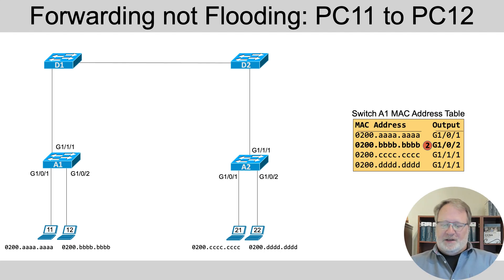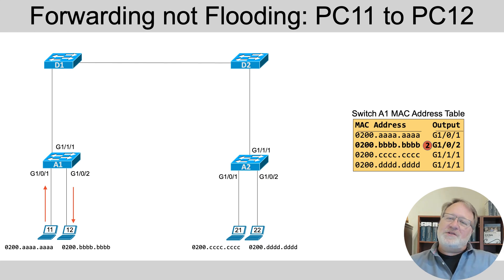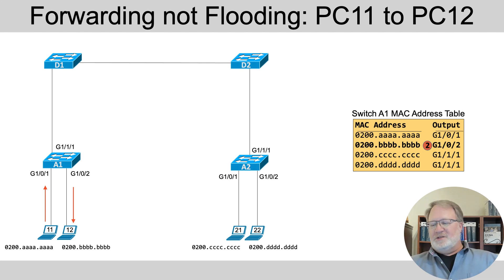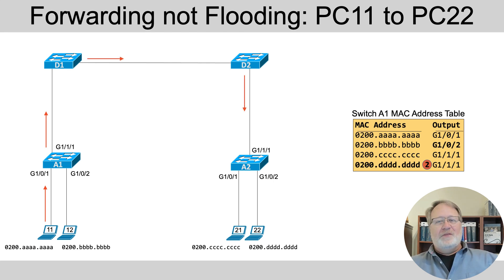Say PC11 is sending a frame to PC12 — they're right beside each other in the lower left of the figure. If all four switches have full MAC tables, Switch A1's MAC table entry lets it forward the frame right back down port 2 to PC12, without bothering the other three switches or the other two PCs at all. However, if the destination is PC22 on the far right, the frame obviously has to go around the whole network. But Switch A1 doesn't flood it — it doesn't send it down to PC12. Instead, it forwards through the other switches, and the frame is ultimately forwarded out only the one port connected to PC22.